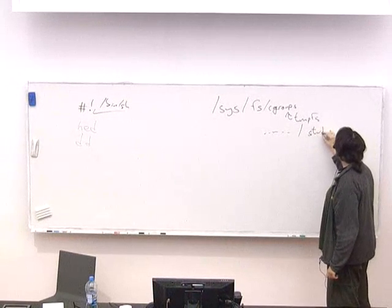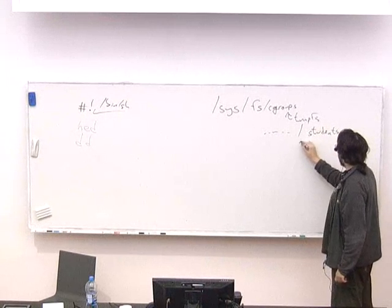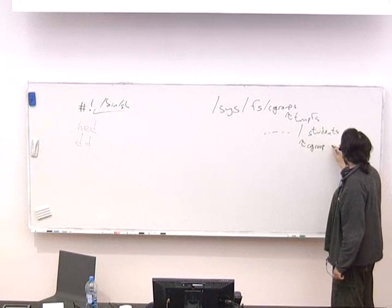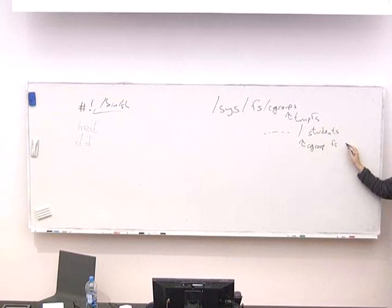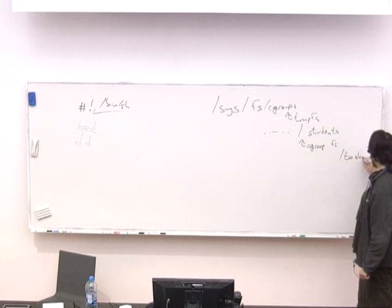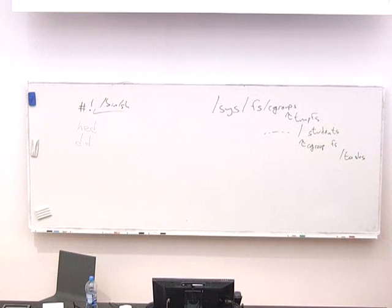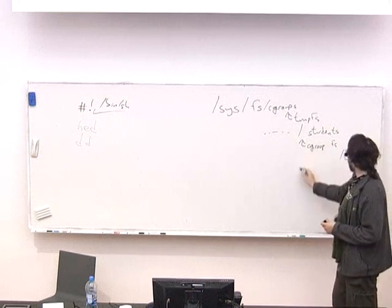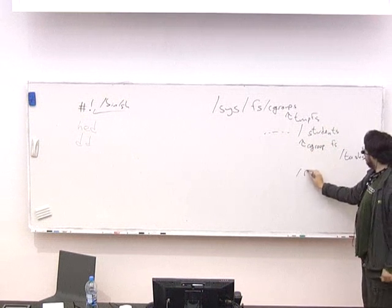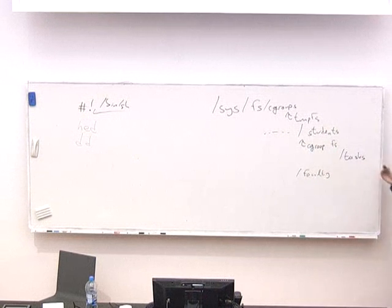Like, for example, students, and mount the C-group file system to this directory. That will create a bunch of files inside, and you can use these files to limit the resource consumption. You can use the file 'tasks' to add processes there. You can just use echo to append another line with the PID of a process. And of course, you can create multiple C-groups, like faculty and so on.